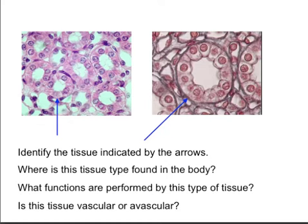Secretion is the production of a product inside the cell which is actively transported outside the cell. This can occur via exocytosis or active transport, both of which require ATP. Active transport involves membrane protein pumps that use ATP to move a component from inside to outside the cell. Exocytosis involves enclosing a cell product inside a membrane-enclosed vesicle, which fuses with the cell membrane and releases the product; the vesicle is then recovered and reused.